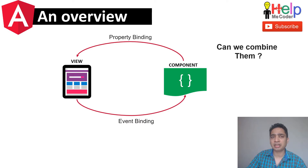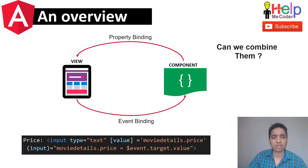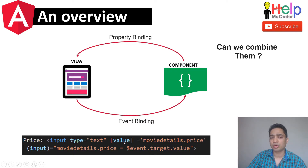We can combine property binding and event binding to act as two-way binding. For example, if you have an input box and want to show data from the component class to the view, you use property binding with square brackets and display the value — for instance, movieDetails.price defined in the component class is displayed as the value of your text box.